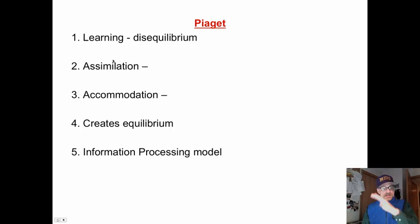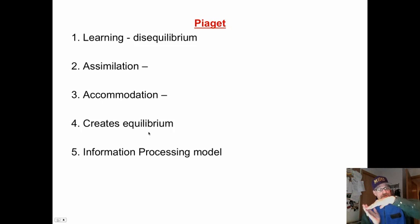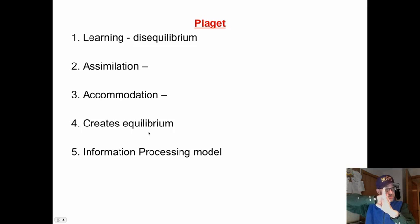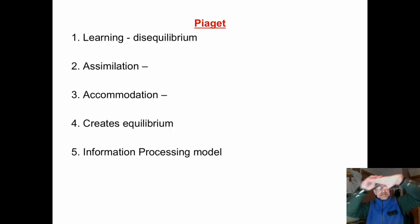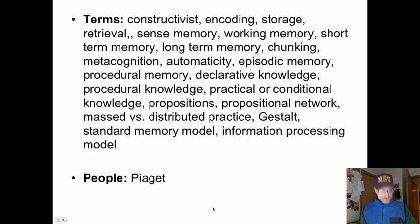The cycle of learning continues: we create disequilibrium, then assimilation, accommodation, equilibrium, then disequilibrium again. A good teacher arouses curiosity and creates this disequilibrium, so students naturally want to find out, assimilate, and accommodate. We use the information processing model to describe learning in cognitive learning theory.